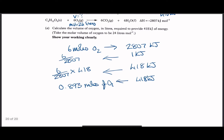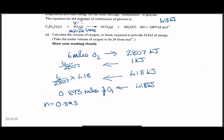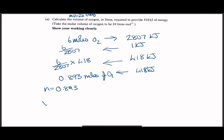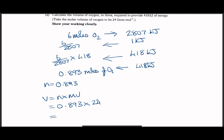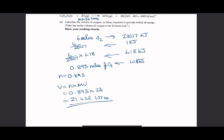Now we have the number of moles, we use the molar volume relationship to find the volume. V = N × MV = 0.893 × 24 = 21.432 litres. You can round to as many decimal places as you like — 21, 21.4, or 21.43 — as long as your rounding is correct.